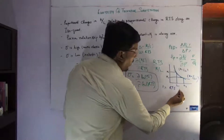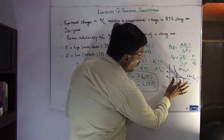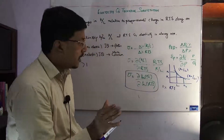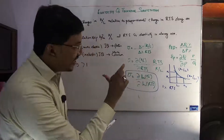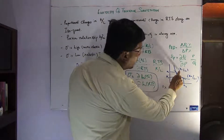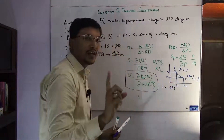So when RTS changes between two points, we observe how much change occurs in the capital-labor ratios K1/L1 and K2/L2. This measured response is the elasticity — the general definition of elasticity of technical substitution.